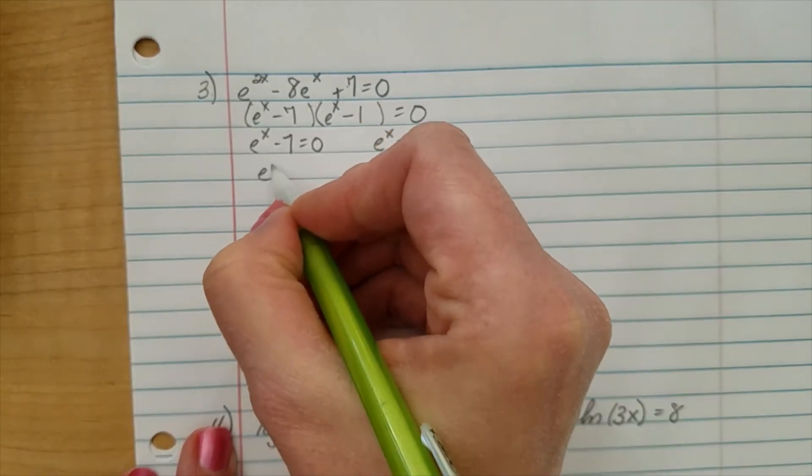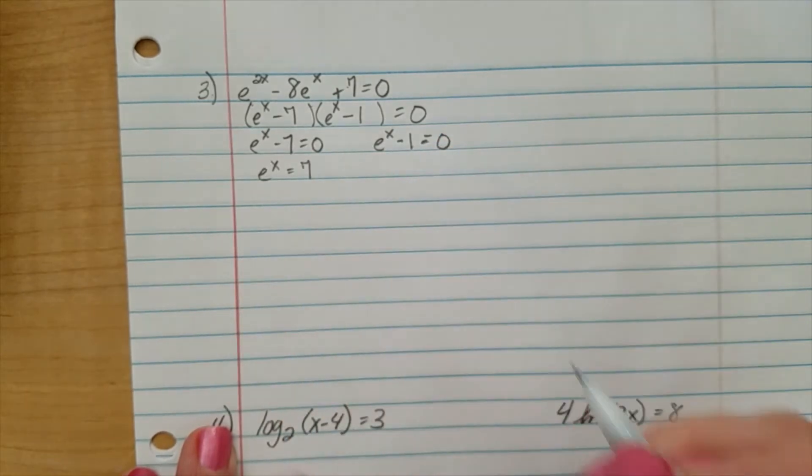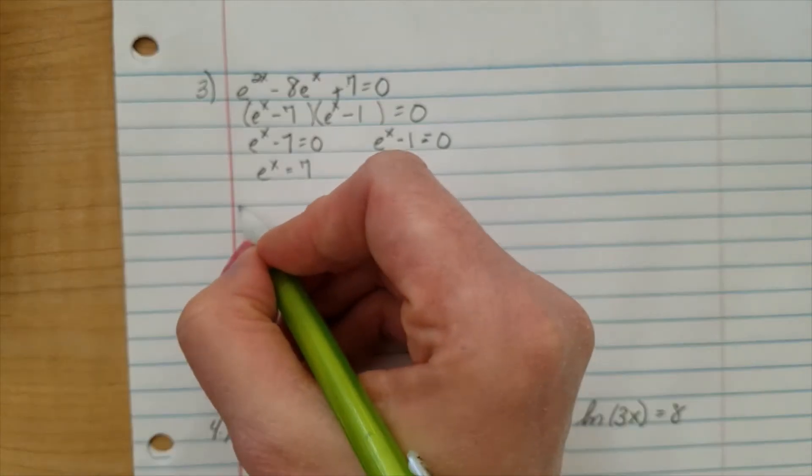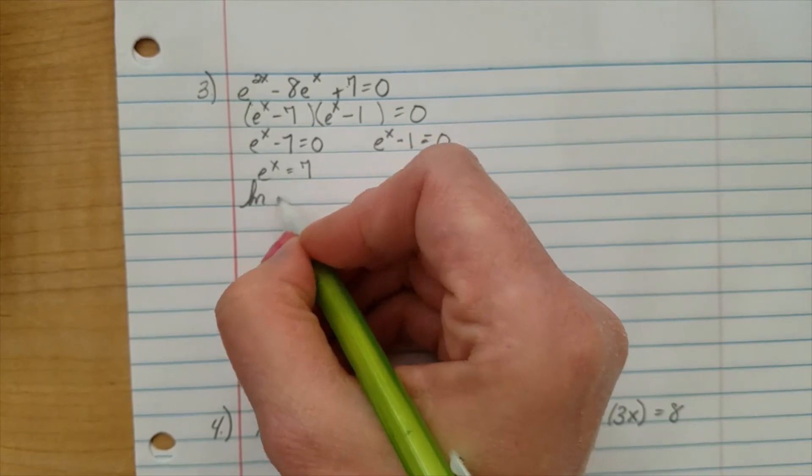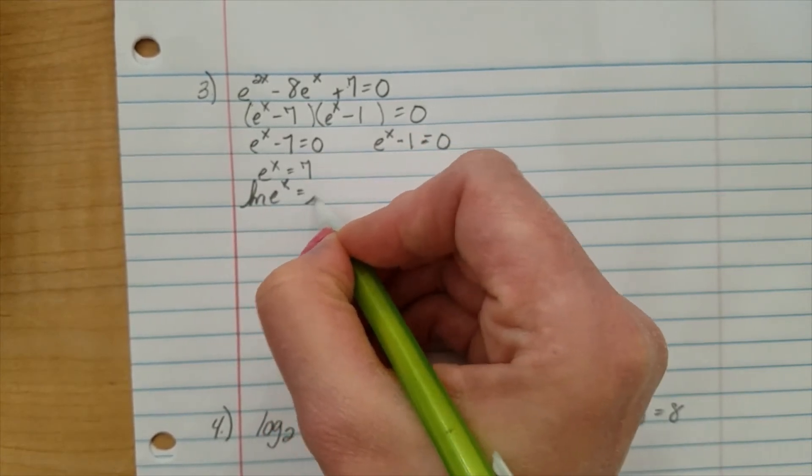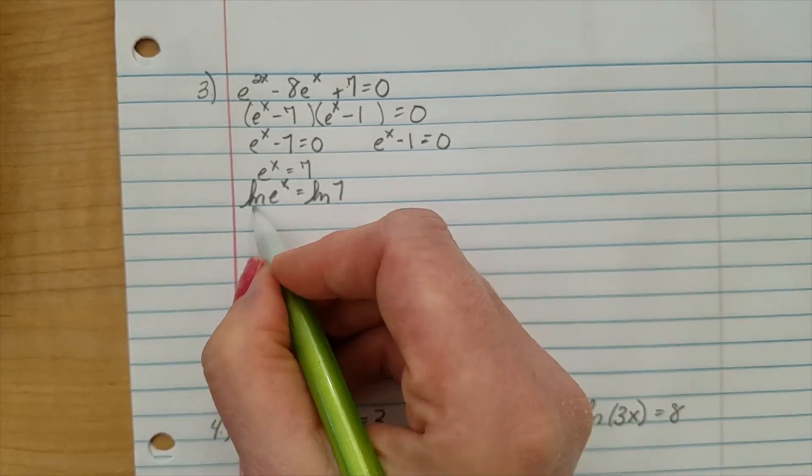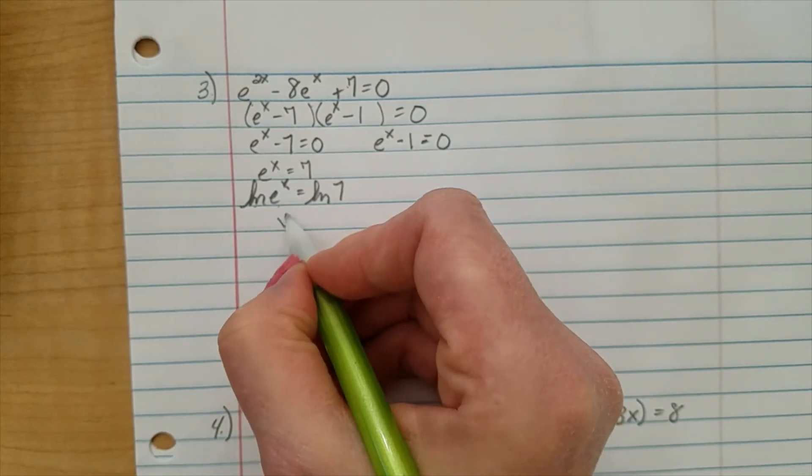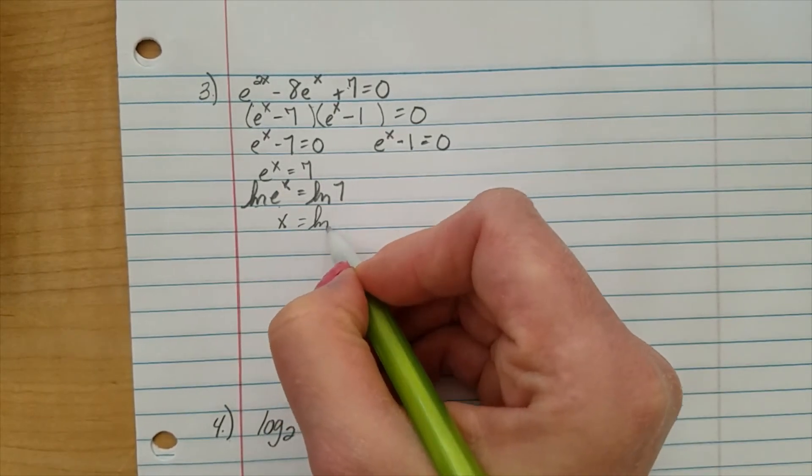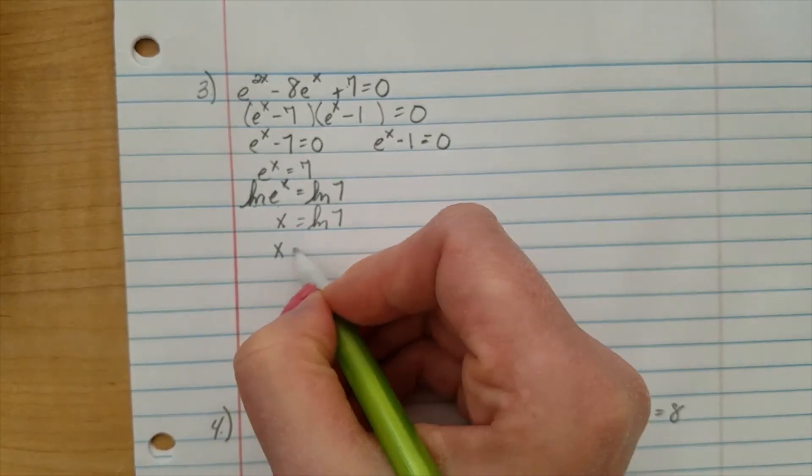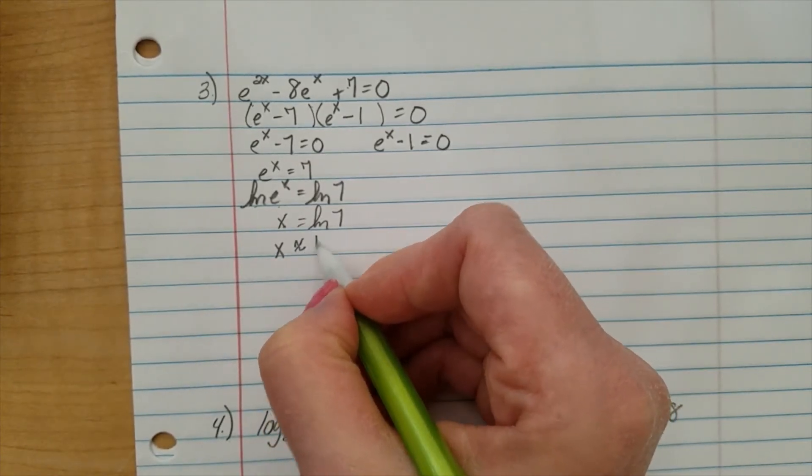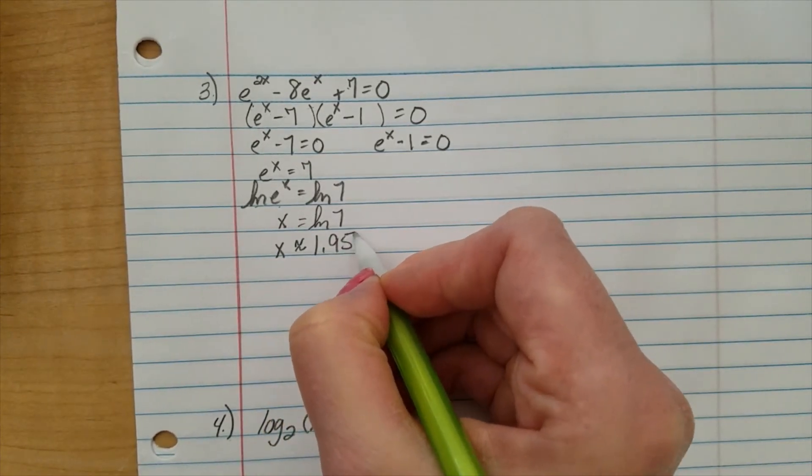Here, e to the x equals 7. Take the natural log of both sides. We've got to get at that x. Natural log and e undo each other. We have x equals natural log of 7. If you pop that into a calculator, that is approximately 1.95.